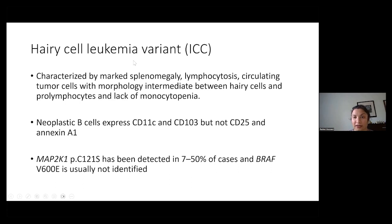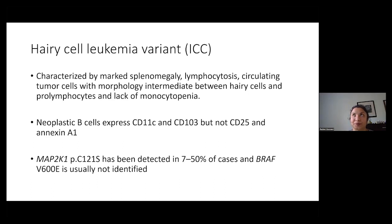Hairy cell leukemia variant — no longer in the WHO but still a separate entity in the ICC — is characterized by marked splenomegaly, lymphocytosis, circulating tumor cells with morphology intermediate between hairy cells and prolymphocytes, and a lack of monocytopenia. The neoplastic B cells express CD11C and CD103, but not CD25 and annexin A1. MAP2K1 has a hotspot mutation at residue 121, detected in up to 50% of cases, and may be responsive to MEK inhibitor therapy. BRAF V600E is usually not identified.